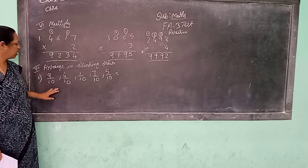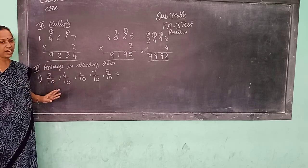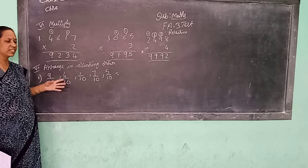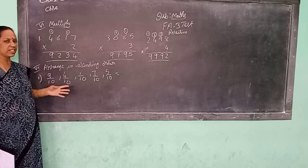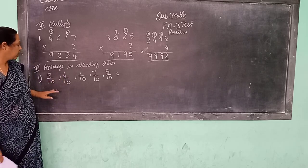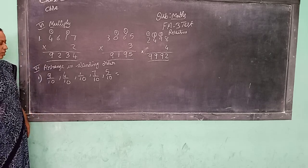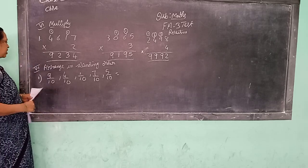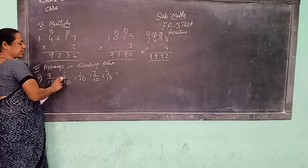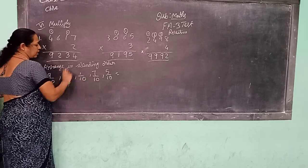See here, denominators are the same, so numerators are different. In the numerator, whichever is the greater number, that fraction is greater. Whichever is smaller is smaller, when denominators are the same. Now see here, the numerators are 9, 4, 1, 7, 5.